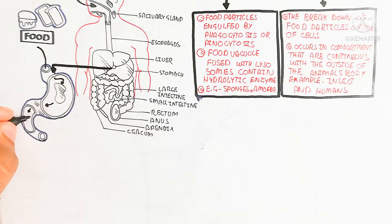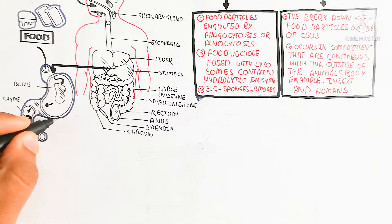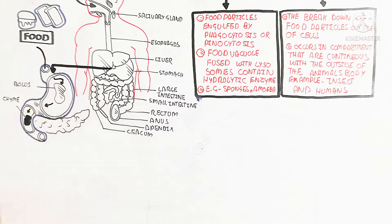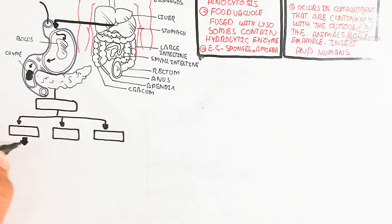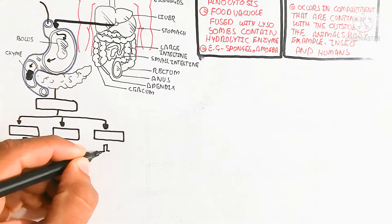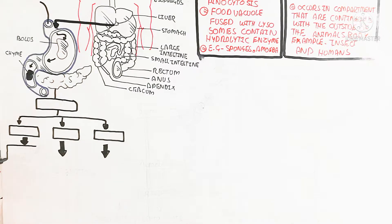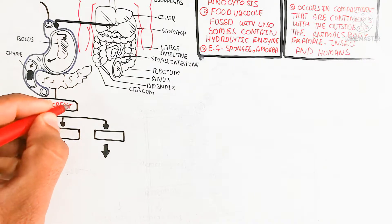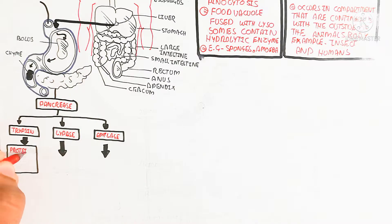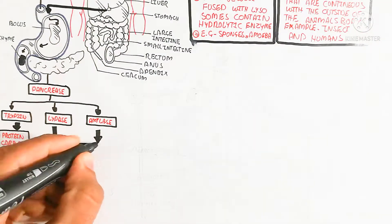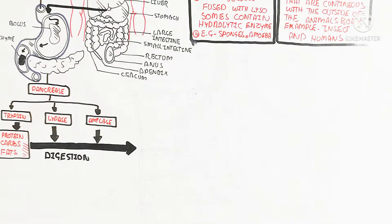Food is taken in the form of a bolus after mastication. This bolus goes into the duodenum after partial digestion of protein, converting into chyme. In the duodenum, the pancreas and gallbladder produce different enzymes and bile pigments. The pancreas produces trypsin, lipase, and amylase, which are used for the complete digestion of proteins, carbohydrates, and fats.